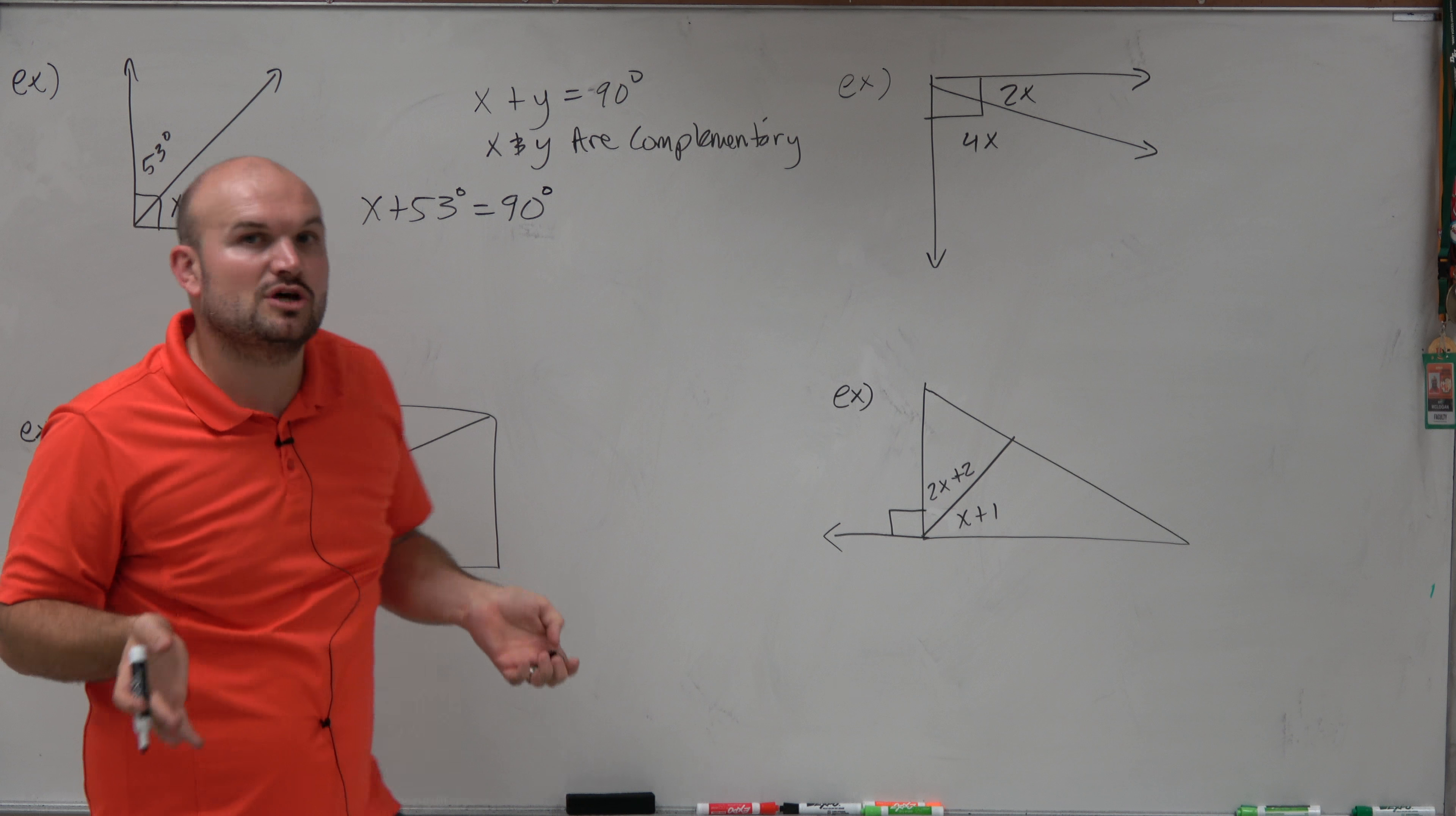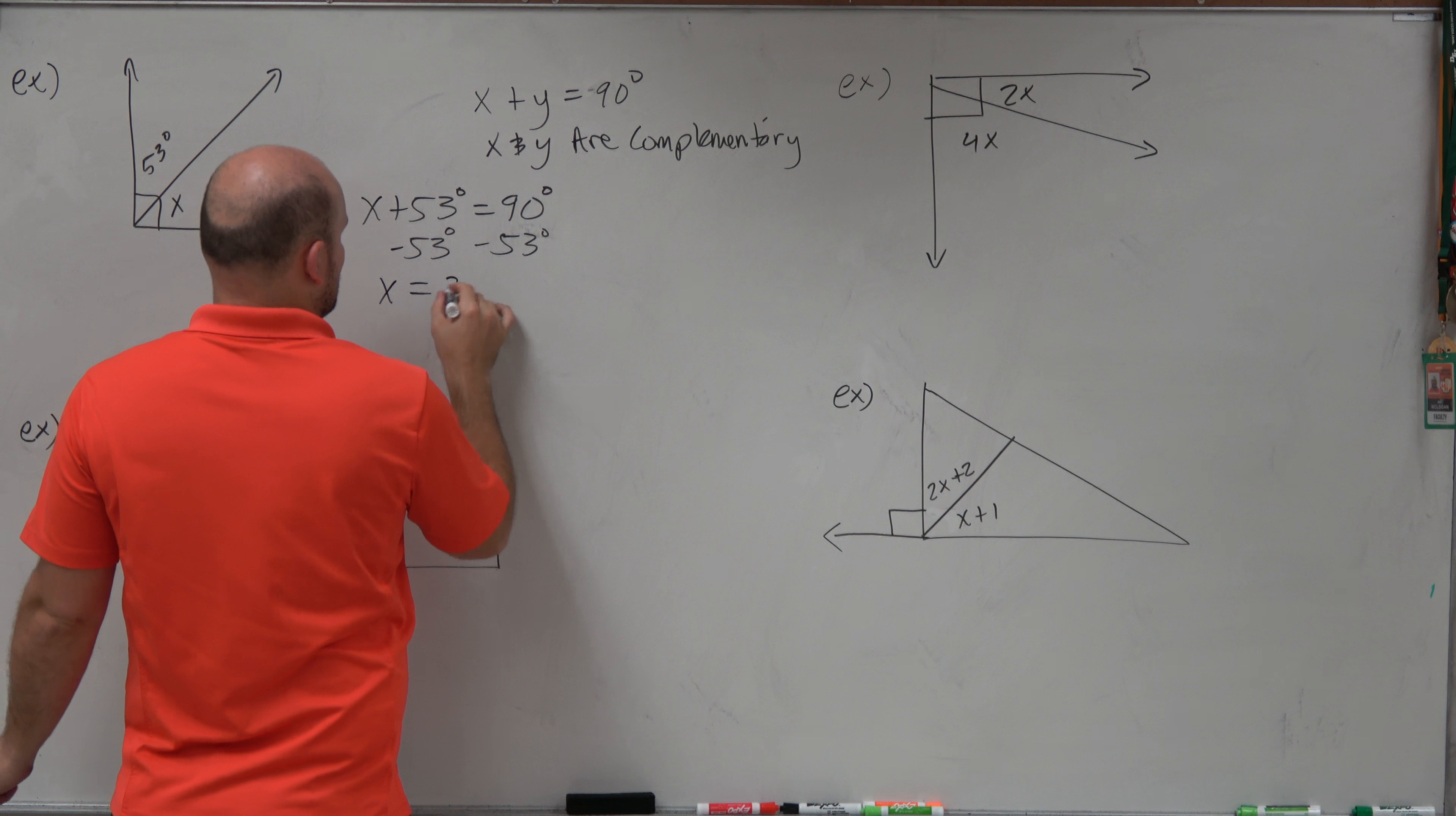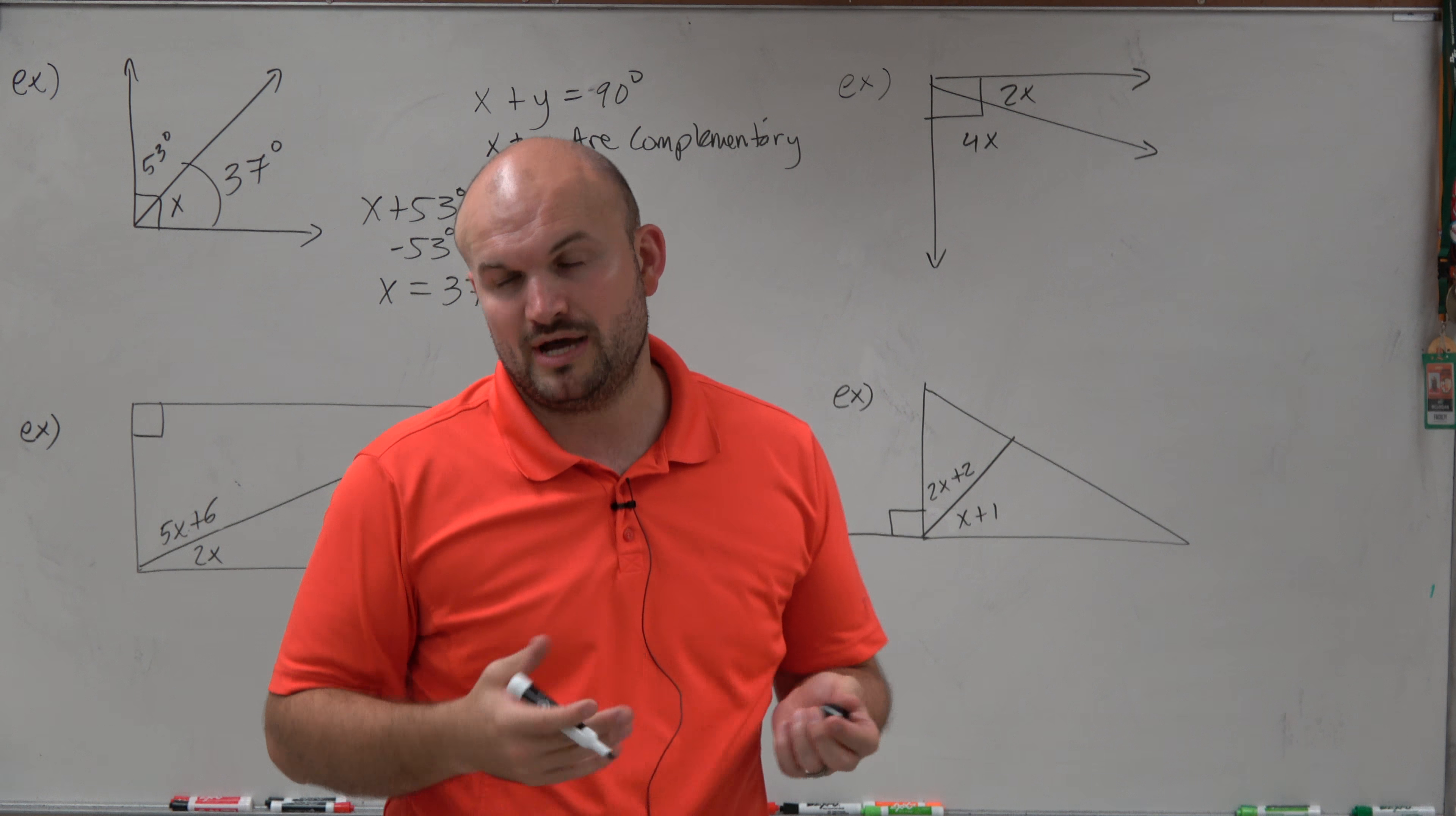Now, all I need to do is solve for x to find my missing measure. So I subtract 53 degrees on both sides, and I have x equals 37 degrees. So that angle measure is 37 degrees.